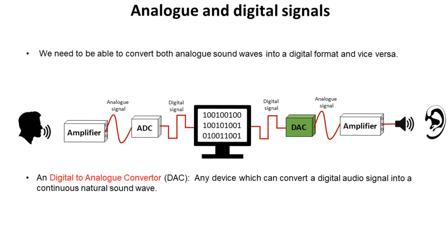At the other end, the digital to analogue converter is any device which converts the digital signal into continuous natural sound waves, which are then played through an amplifier and out through a speaker.